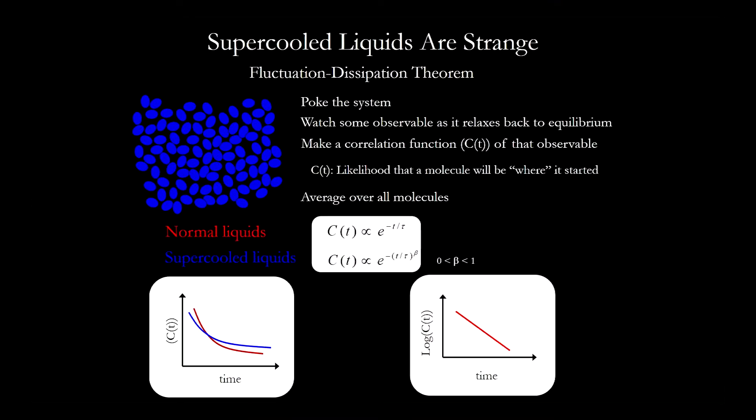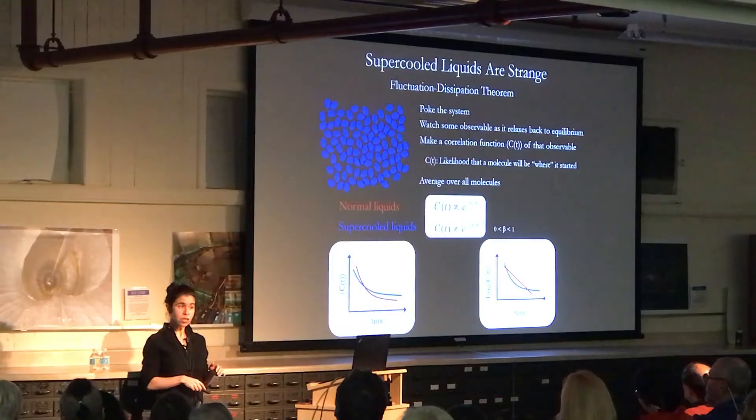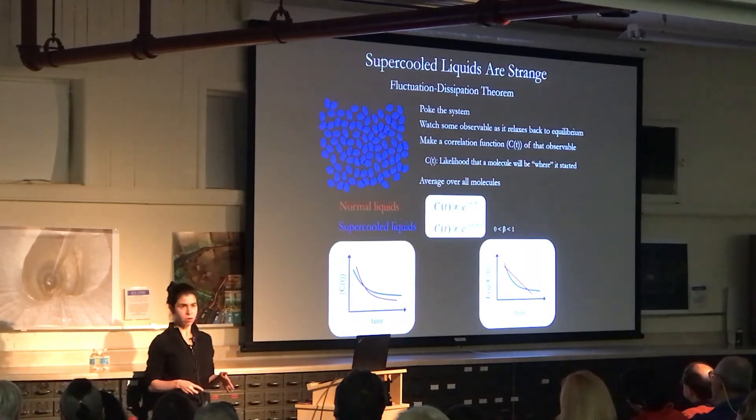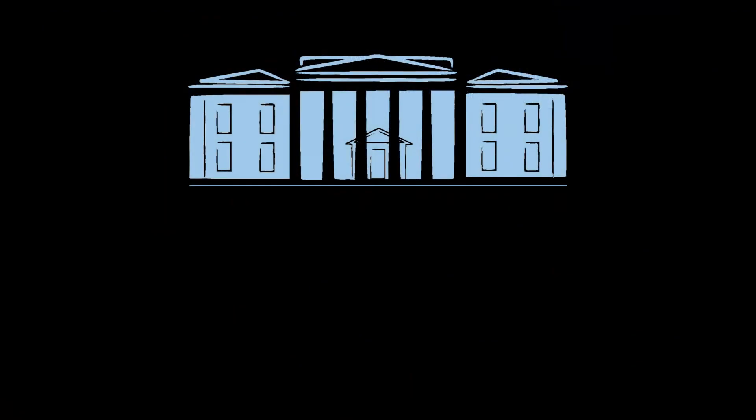So if we just change the y-axis over here to being a logarithm, then the normal liquid is going to look like a straight line, but the supercooled liquid is still going to look like a curved line. So that's going to be our easy way of distinguishing whether when we poke the thing it's acting like a normal liquid or not a normal liquid when it relaxes.